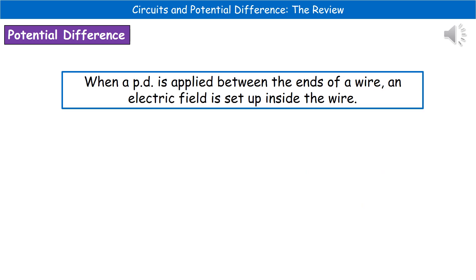What we find then is that when we apply a potential difference between the ends of a wire, we get an electric field set up inside it. This is something that happens incredibly quickly so that basically as soon as you've connected it, the charge particles are actually going to start to move straight away.